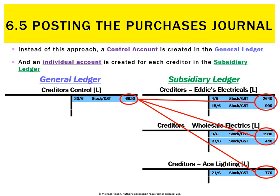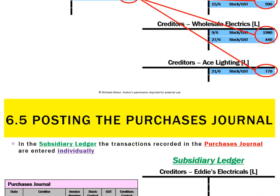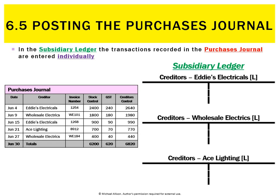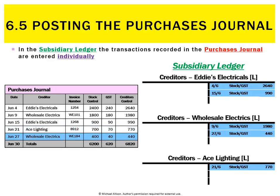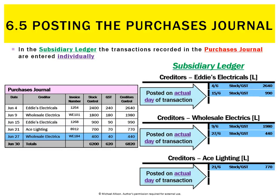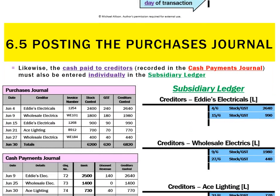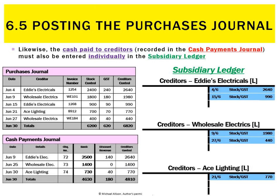The total in the control account must simply be the sum total of all the individual transactions in the subsidiary accounts. Looking at the purchases journal: the first transaction on the 4th was Eddie's Electricals selling us stock of 2400 plus GST for a total of 2640, entered individually in Eddie's Electricals' subsidiary account. On the 9th there's one to wholesale electricals, then Eddie's Electricals again on the 15th, Ace Lighting on the 21st, and wholesale electrics on the 27th — each entered on the actual date it occurred.